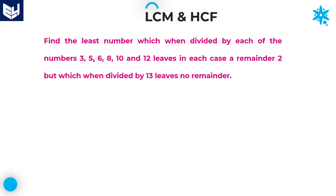Let's move on to the next question. This is a very important problem. Find the least number which when divided by each of the numbers 3, 5, 6, 8, 10, and 12 leaves in each case a remainder of 2, but when divided by 13 there is no remainder. Here, the least number when divided by these numbers leaves remainder 2, but when divided by 13 there should not be any remainder.